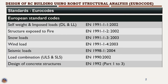EN 1991 Part 1 Section 1 (2002) for structures exposed to fire; EN 1991 Part 1 Section 2 (2002) for snow loads; EN 1991 Part 1 Section 3 (2003) for wind load; EN 1991 Part 1 Section 4 (2003) for seismic load EN 1998 Part 2.1 (2004). For load combination in ultimate limit state and serviceability limit state we need to refer EN 1990 (2002). Design of concrete structures refers to EN 1992 Part 1.